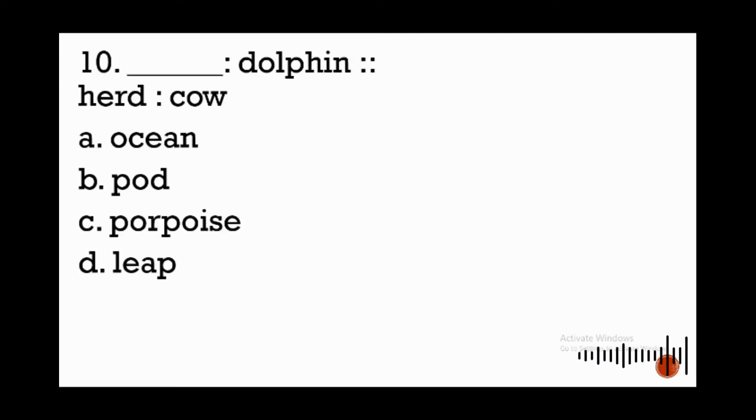Last item for analogy type of questions, number 10: blank is to dolphin as herd is to cow. A herd is a group of cows, so that's what we call a group of cows, herd. What is the term used to call a group of dolphins? Is it ocean, is it pod, is it porpoise, is it leap?